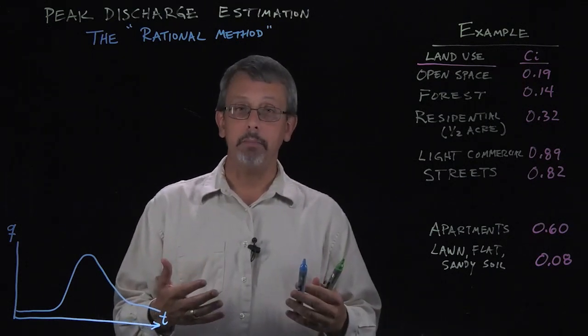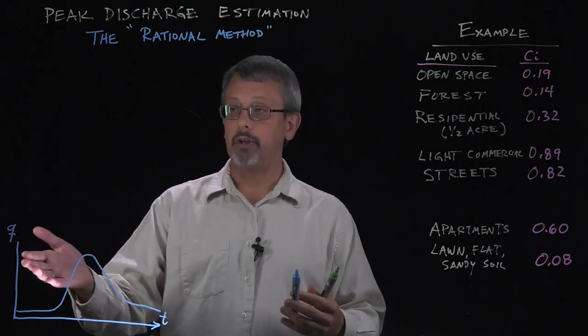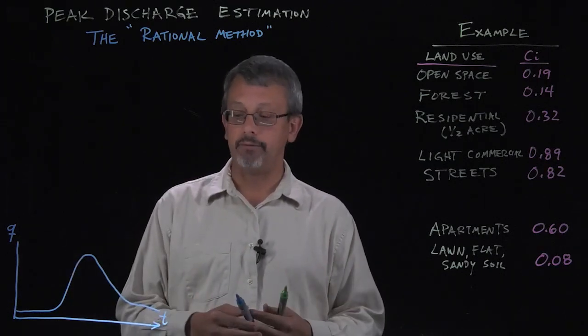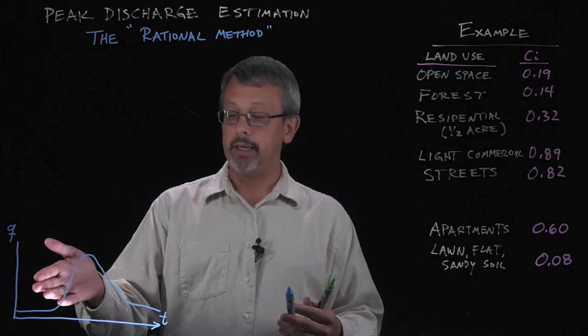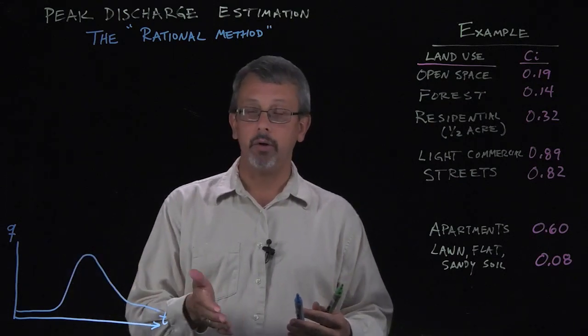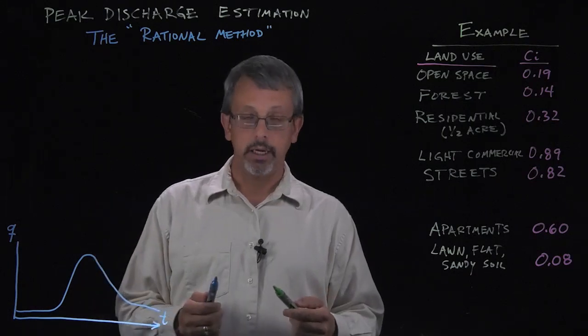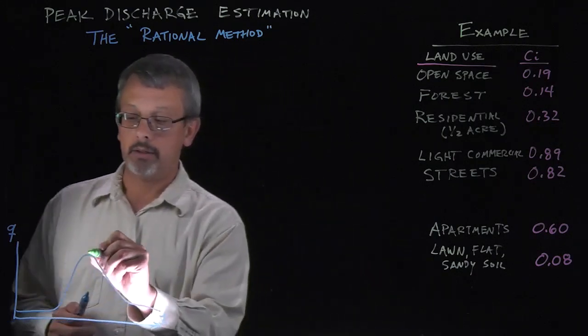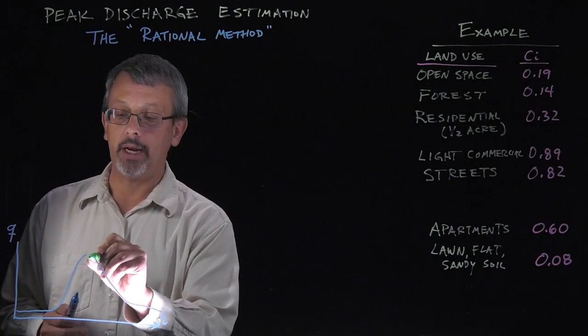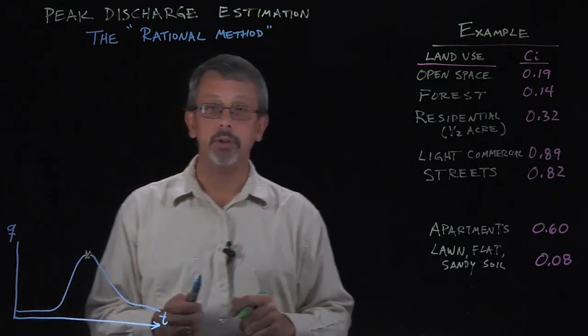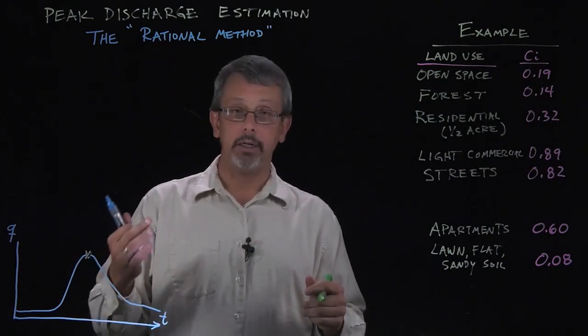Perhaps that runoff might be in a stream. For example, here I have an example of a hydrograph where we're plotting the time t on the horizontal axis and our flow rate q on the vertical axis. One of the things we're interested in, perhaps, is the peak flow rate, the maximum amount of flow that's going by at any period in time.